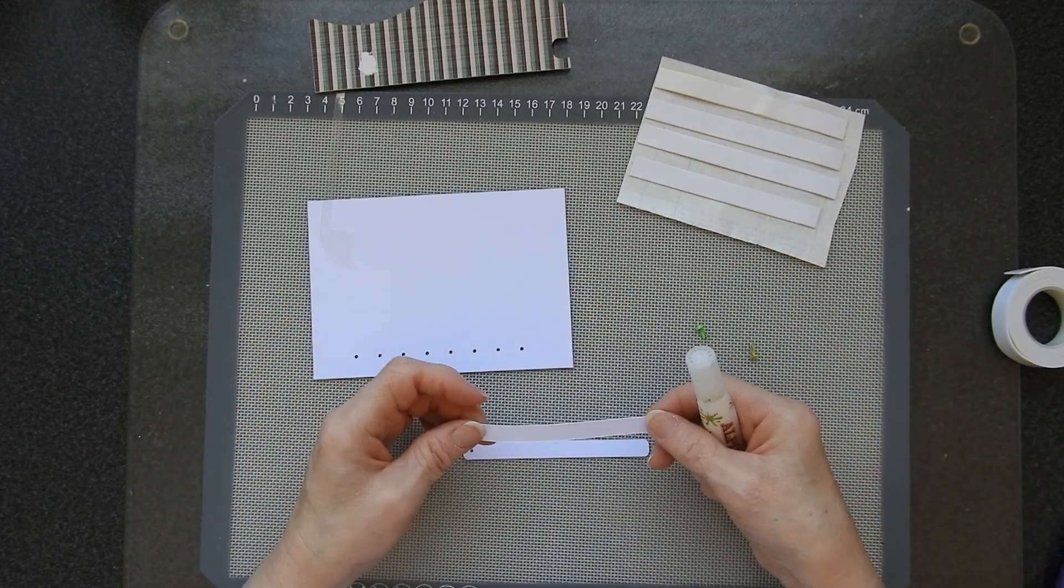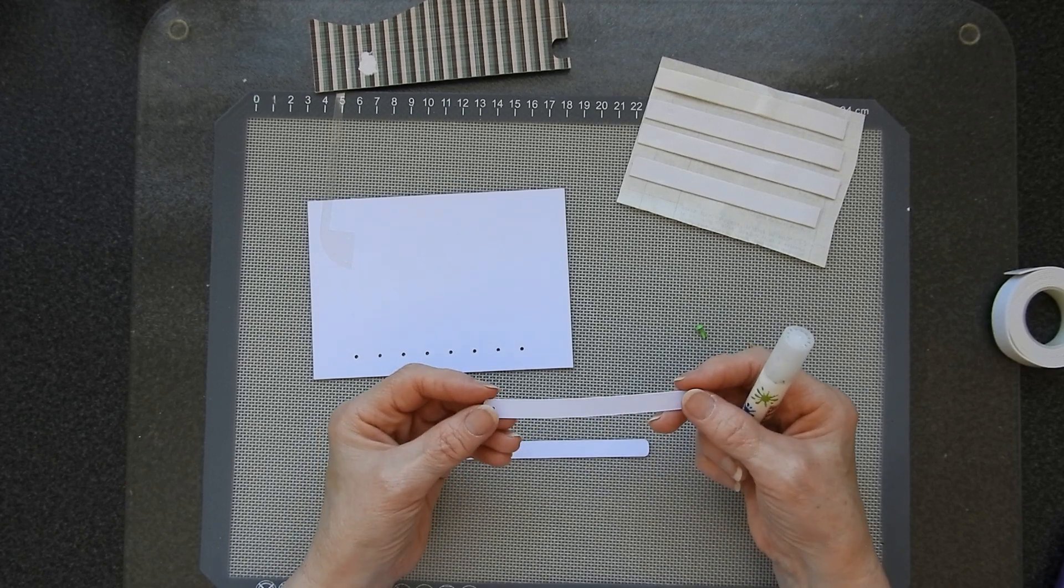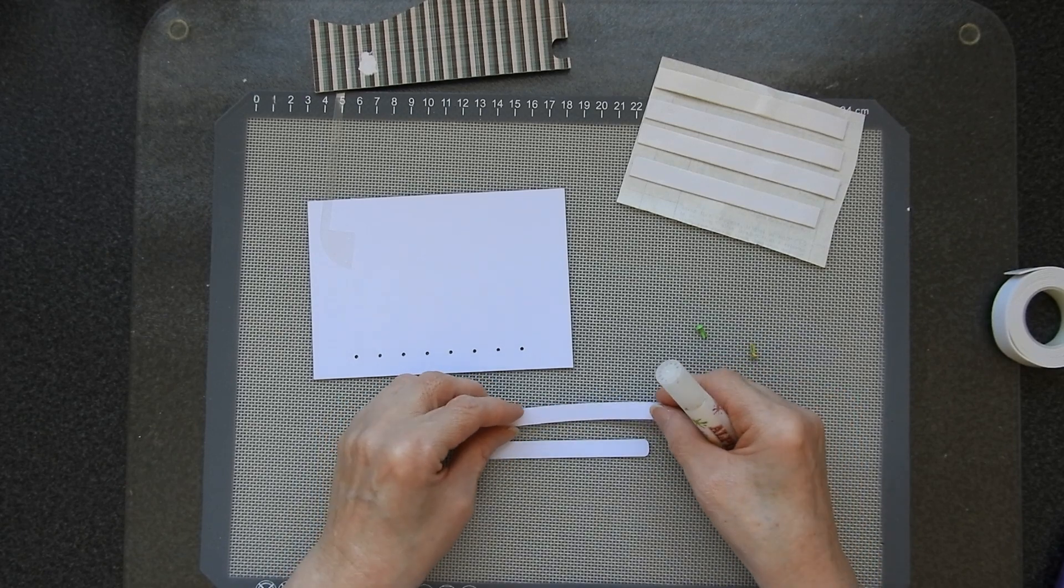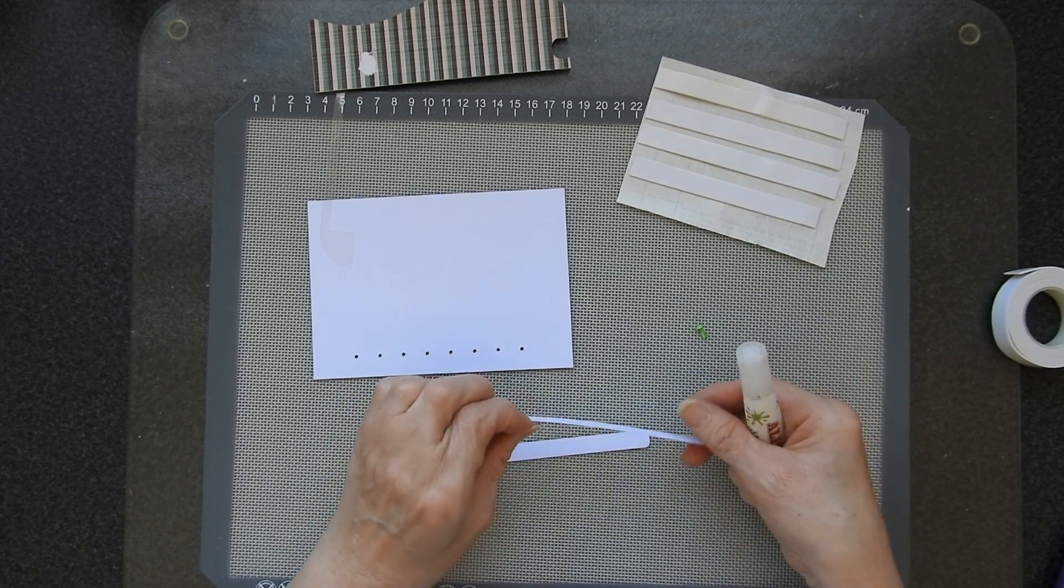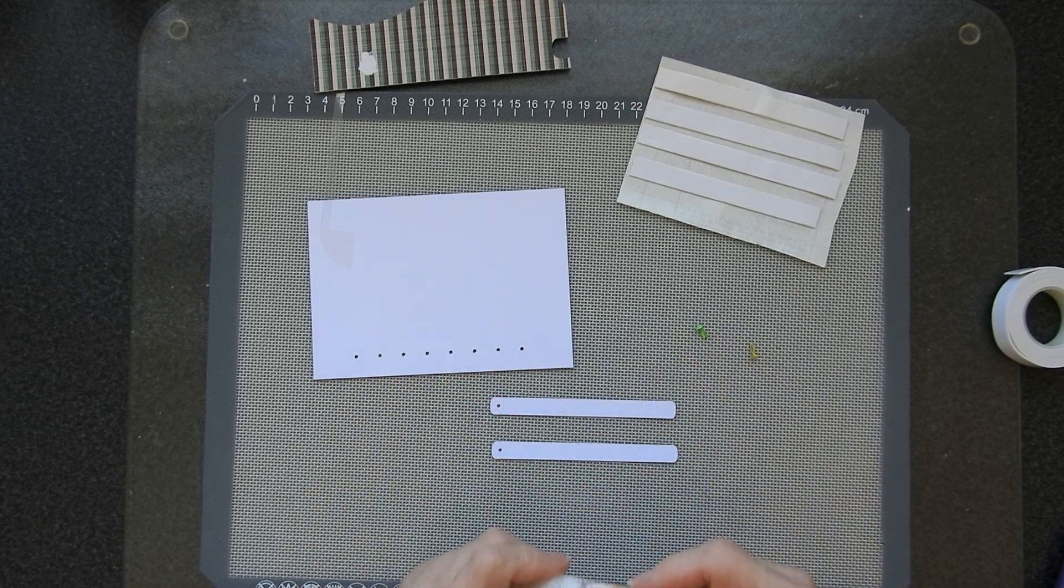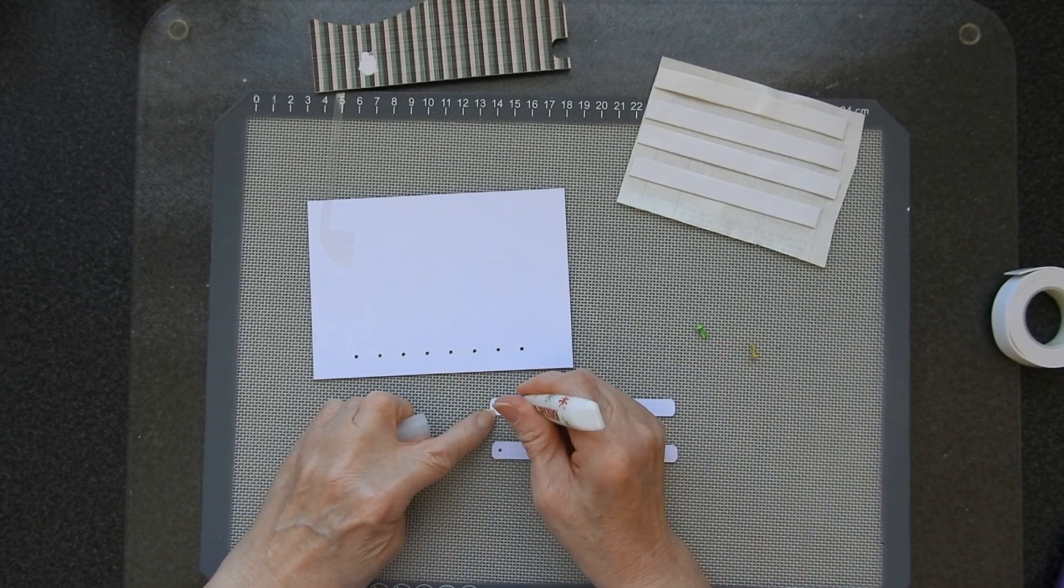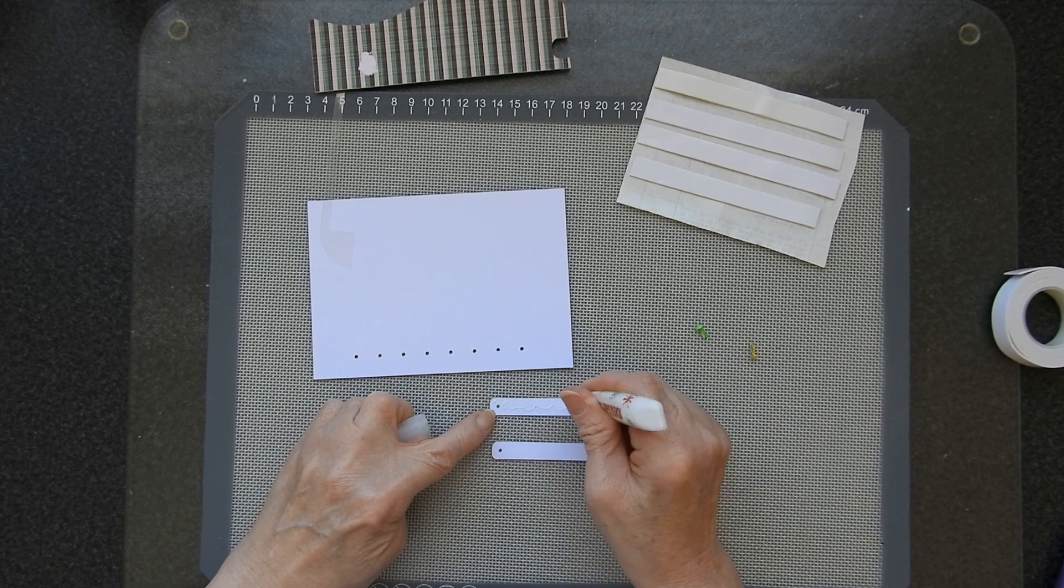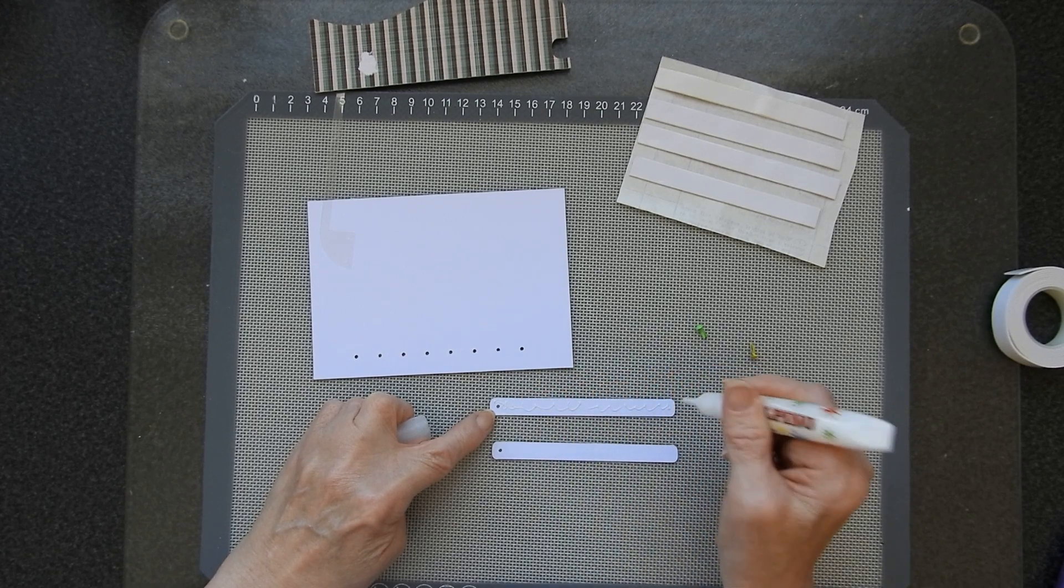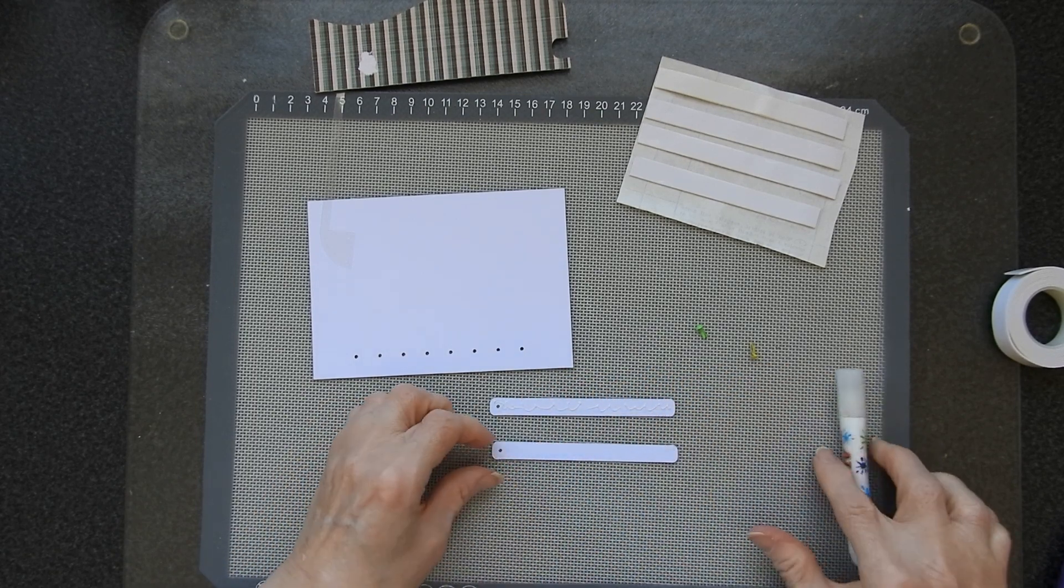So I've cut out my pieces. Now even though this is a 300 GSM card, I am cutting two of these moving stalks because I don't think that otherwise it has enough strength in it. So I'm going to stick two of these together.